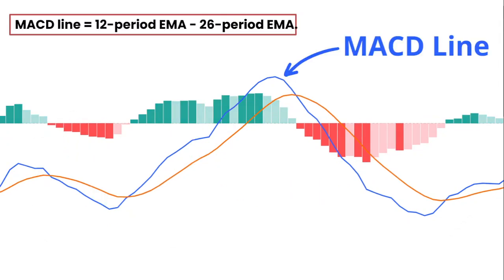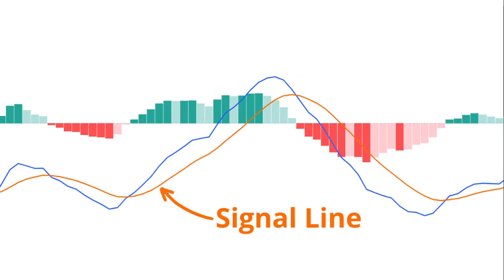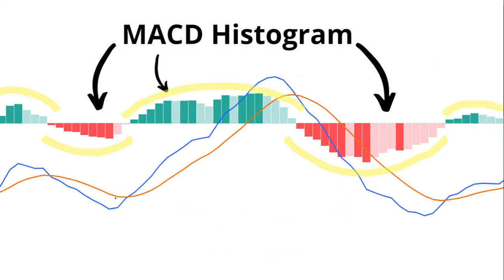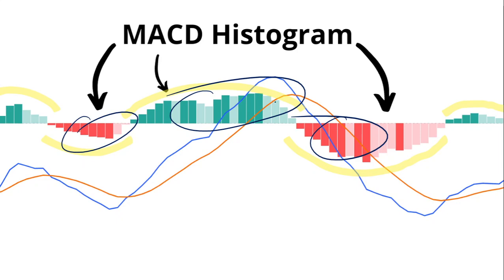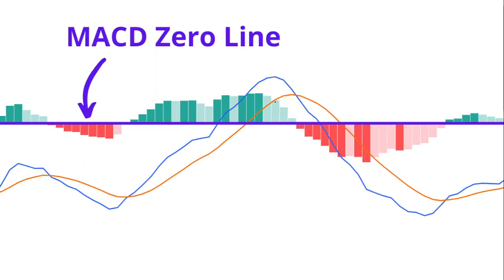The MACD line is 12 periods EMA minus 26 periods EMA. This one is the MACD line. This one is the signal line. These are known as MACD histograms. This line is known as the MACD zero line.